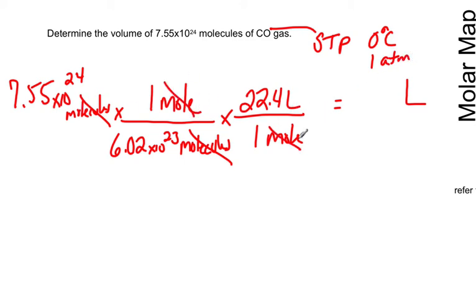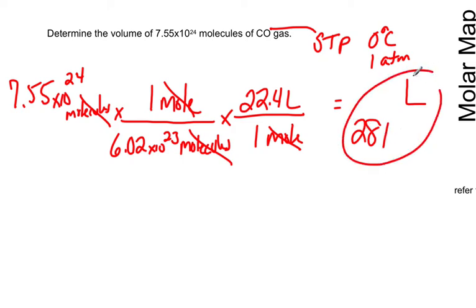It gets us to liters. Do the math: this big number divided by 6.02 times 10 to the 23rd, times 22.4, gives us about 280.9. Rounding to 3 significant figures, that's 281 liters. And there's our volume of that many molecules — lots and lots of molecules, pretty big volume.